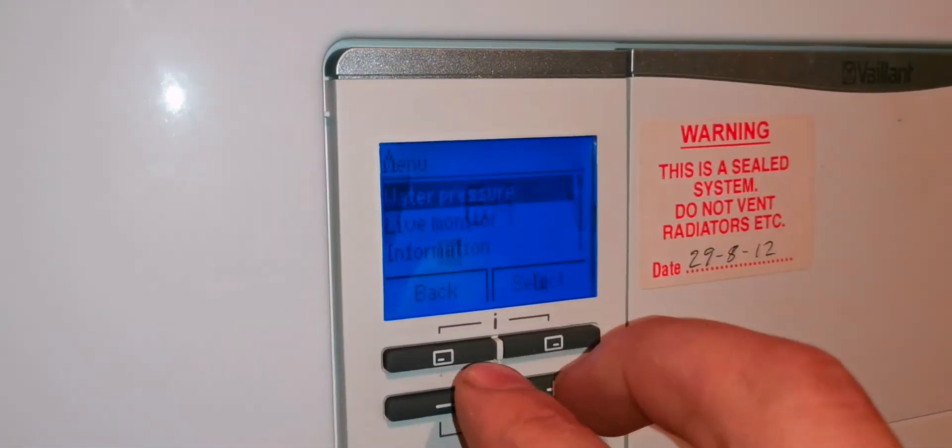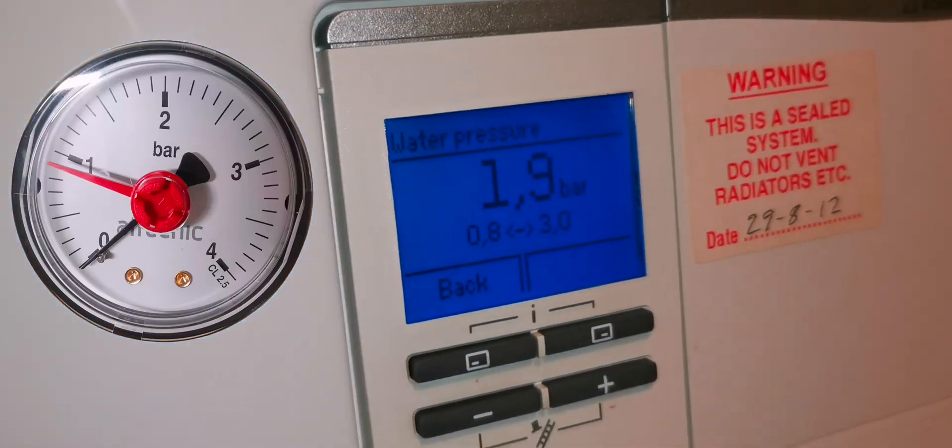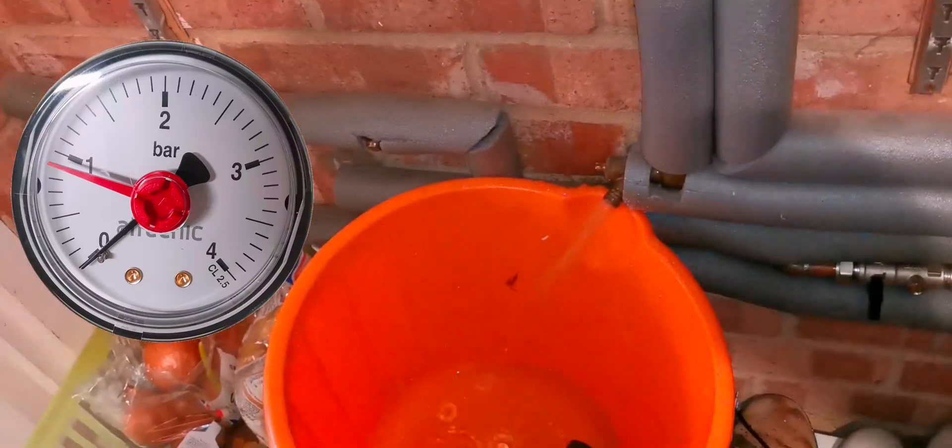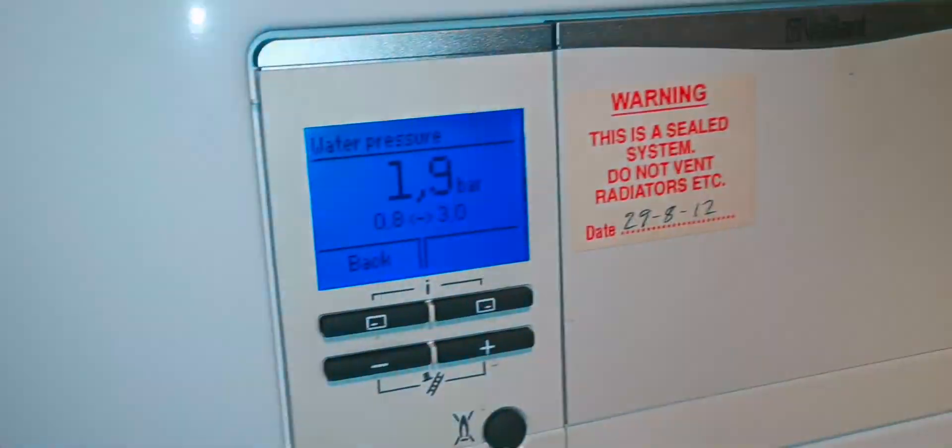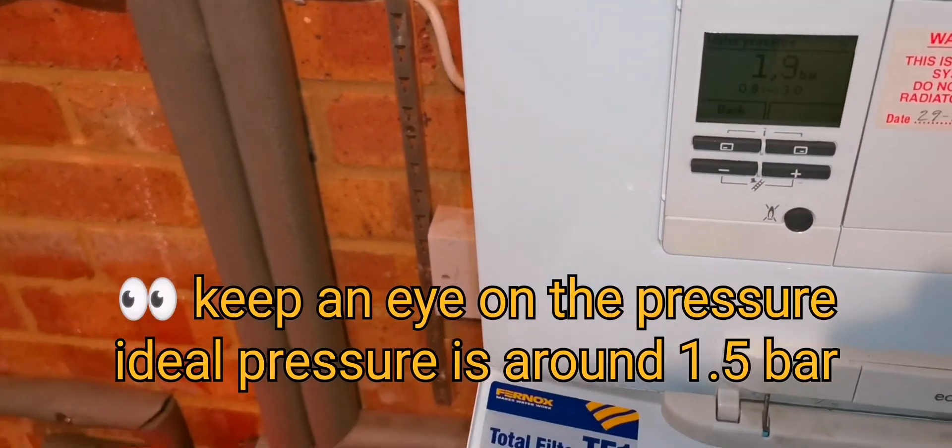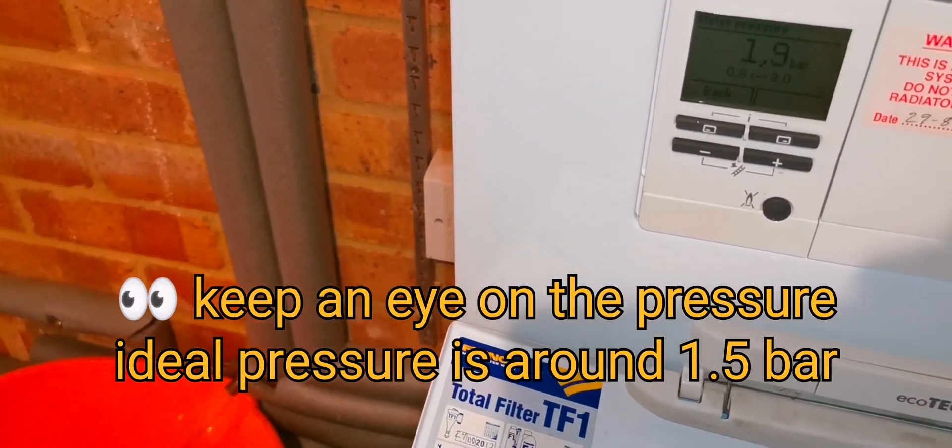So we're going to check the pressure using the pressure gauge or this display in this case, but you might have a gauge as well. As we release the water, the pressure is going to drop, so you want to keep an eye on the boiler.